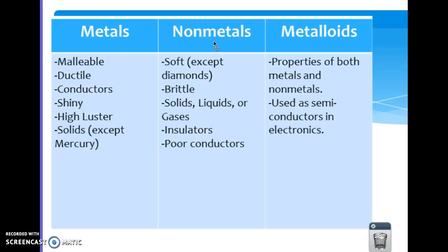So nonmetals are pretty much going to be the opposite of that. They are brittle, which means they tend to break easily. They can be in any phase, solid, liquid, or gas. So unlike metals being good conductors, these are the opposite of that. They're poor conductors, which means they also make good insulators.